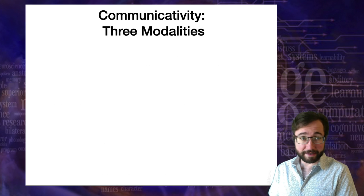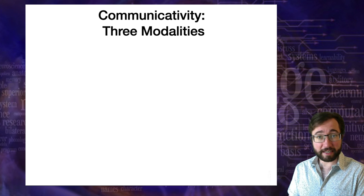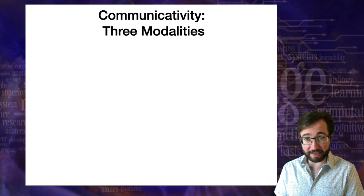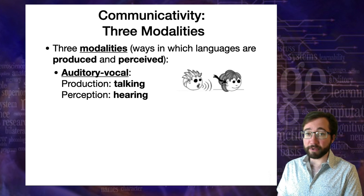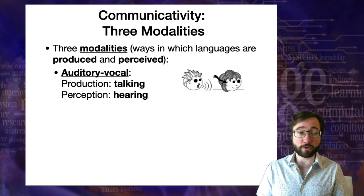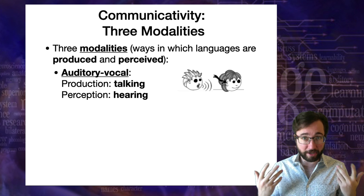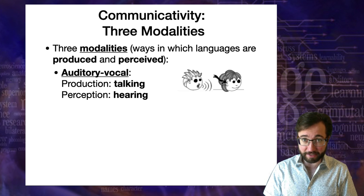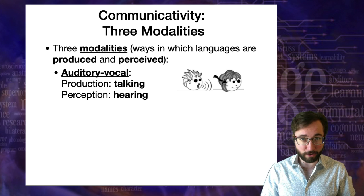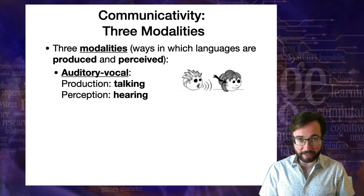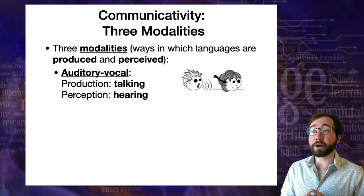There are different ways to produce and perceive language, and these different ways are called modalities. The most common modality for human language is what we call the auditory-vocal modality. That means production consists of talking — moving your mouth and vibrating your vocal cords to produce an acoustic signal — and the perception consists of hearing. So this is spoken language: produced by talking and perceived by hearing. The most common kind, but not the only kind.